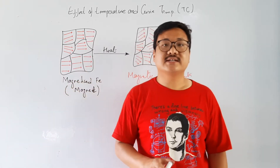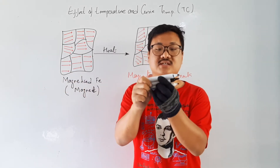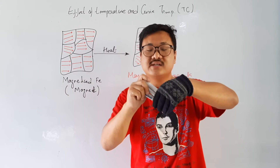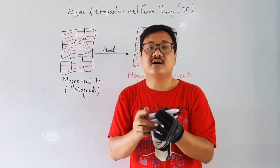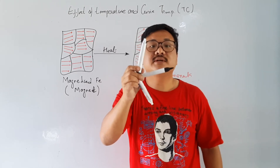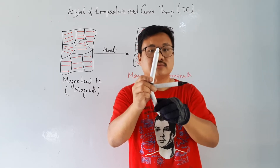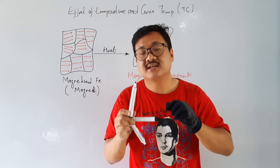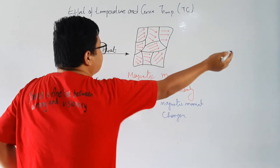So if the direction of magnetic movement changes — it was all in the same direction before — now because of heating, some moments have gone this side, some that side. One is going downward, one is going upward, so they cancel each other. This means the magnetic moments will change and the magnetization will decrease.